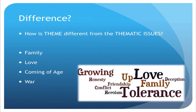That's going to be different from thematic issues. Thematic issues are one-word answers — things like family, love, coming of age, war, conflict. Those types of words might be a topic within a text, or what the author is using as a setting in order to reveal theme. But these one-word answers are not theme. Theme is always going to be a statement or a lesson, whereas thematic issues are just the subjects that a book is about.